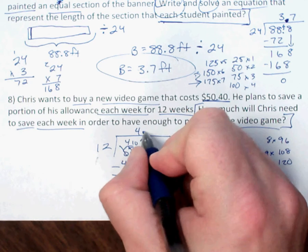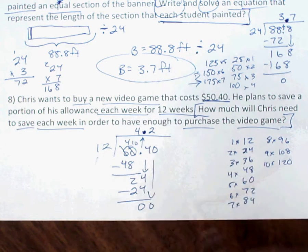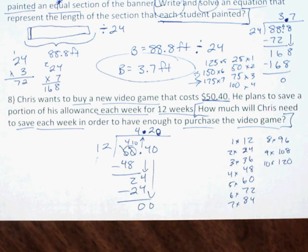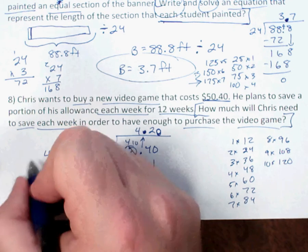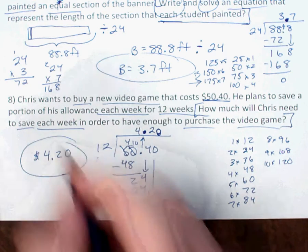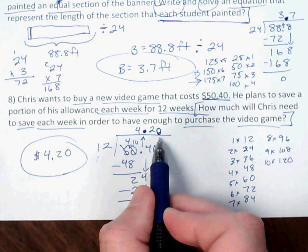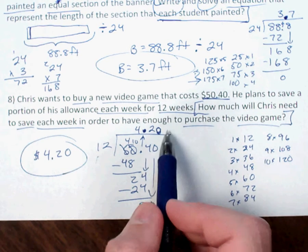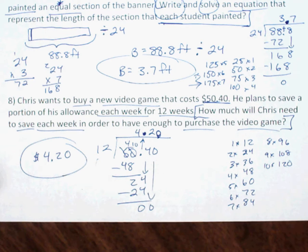Don't forget to put the decimal up at the beginning. Because we're dealing with money, we need to include the trailing zero: we don't say I need to save $4.2 this week — we say $4.20. When dealing with money, you want to go to the hundredths place. You don't want to go beyond hundredths because then you'd be dealing with part of a penny, which doesn't make sense. So Chris needs to save $4.20 each week.